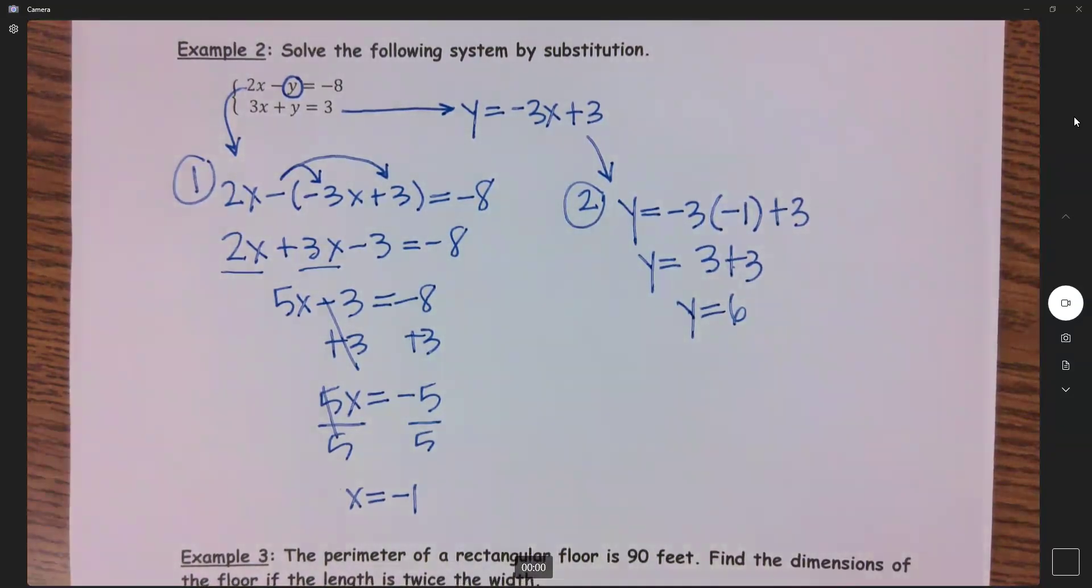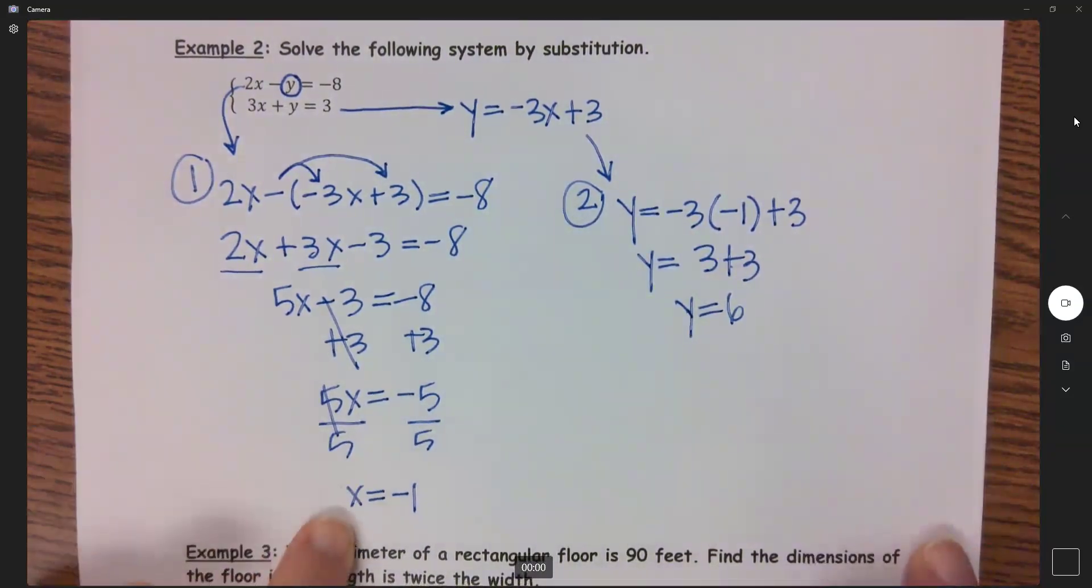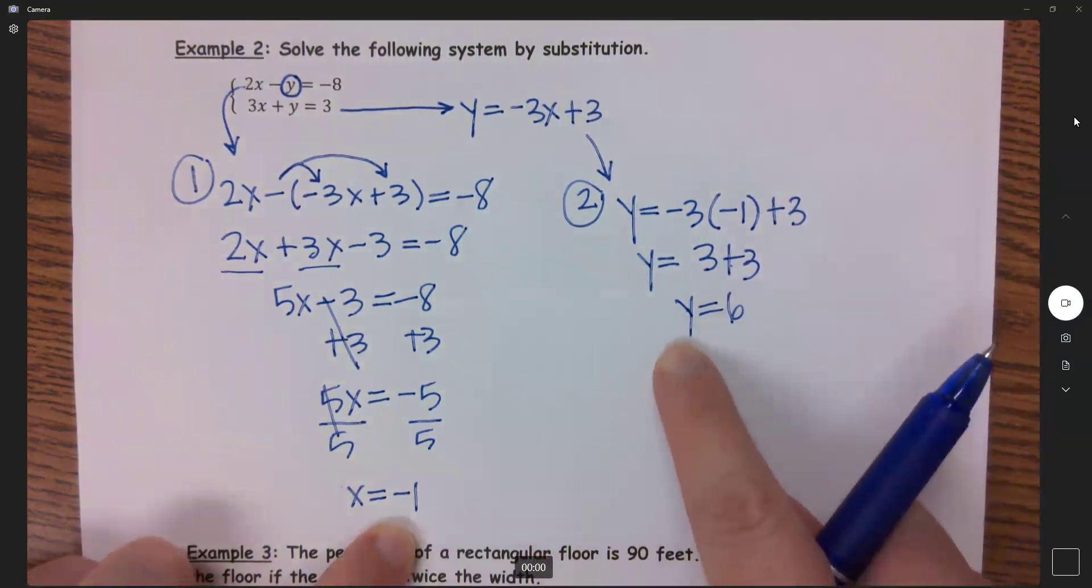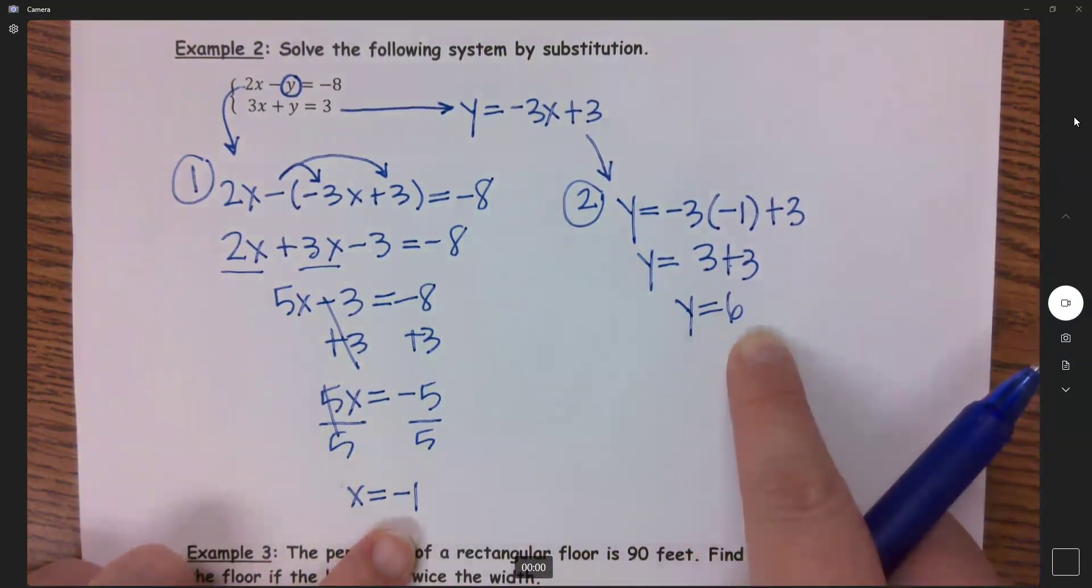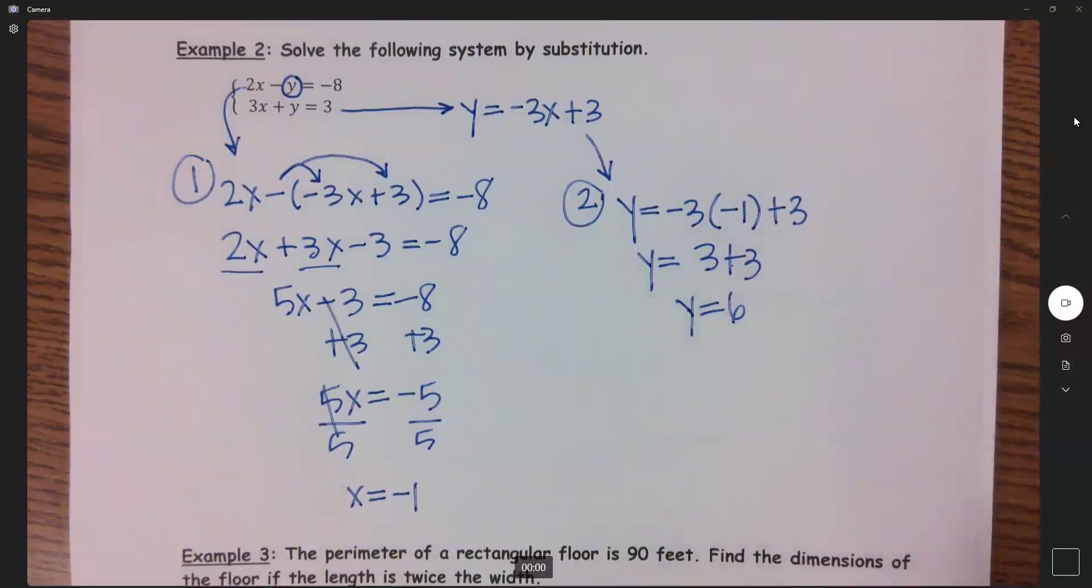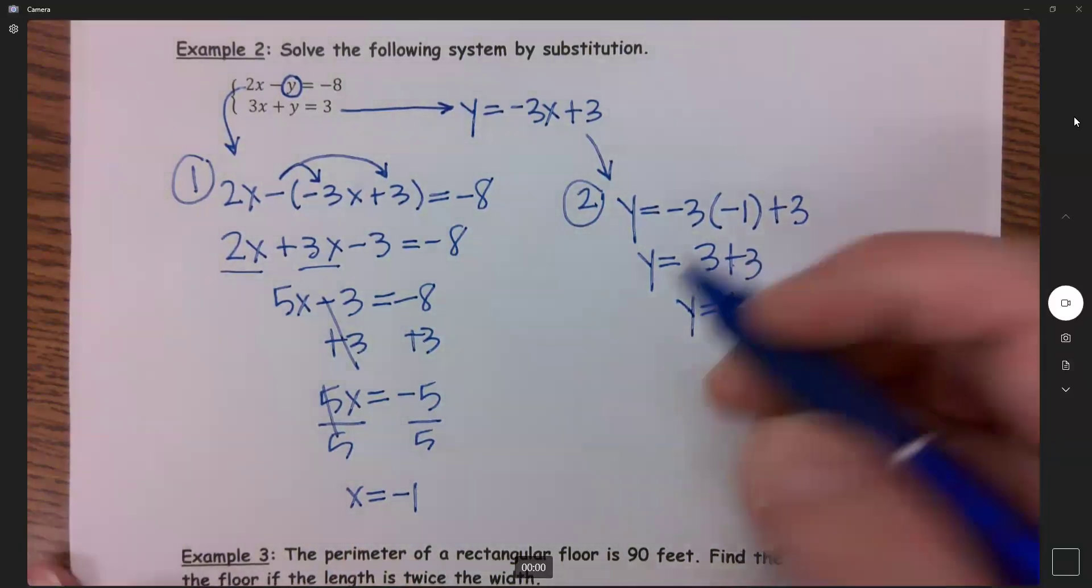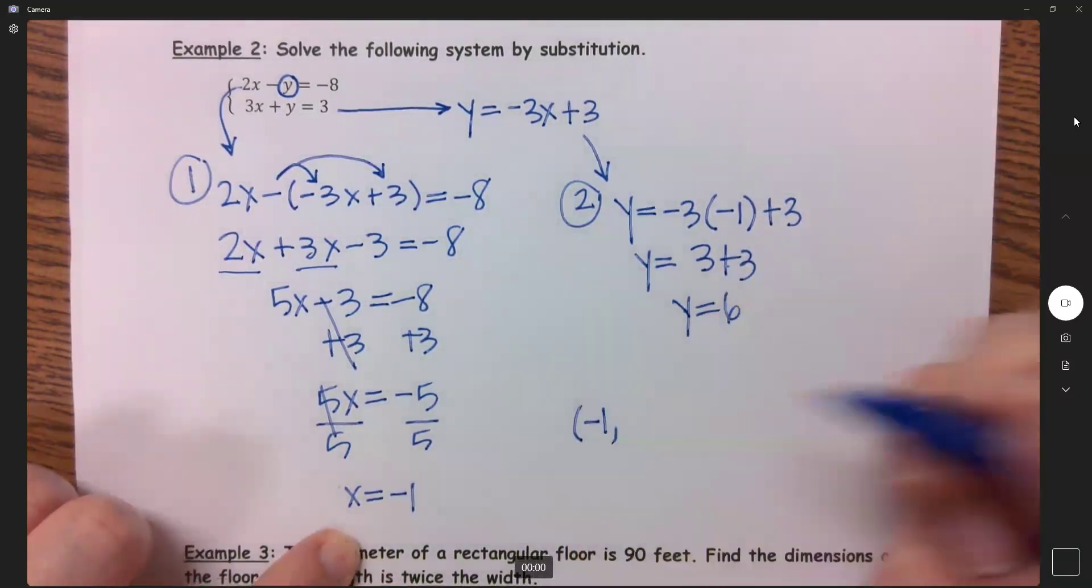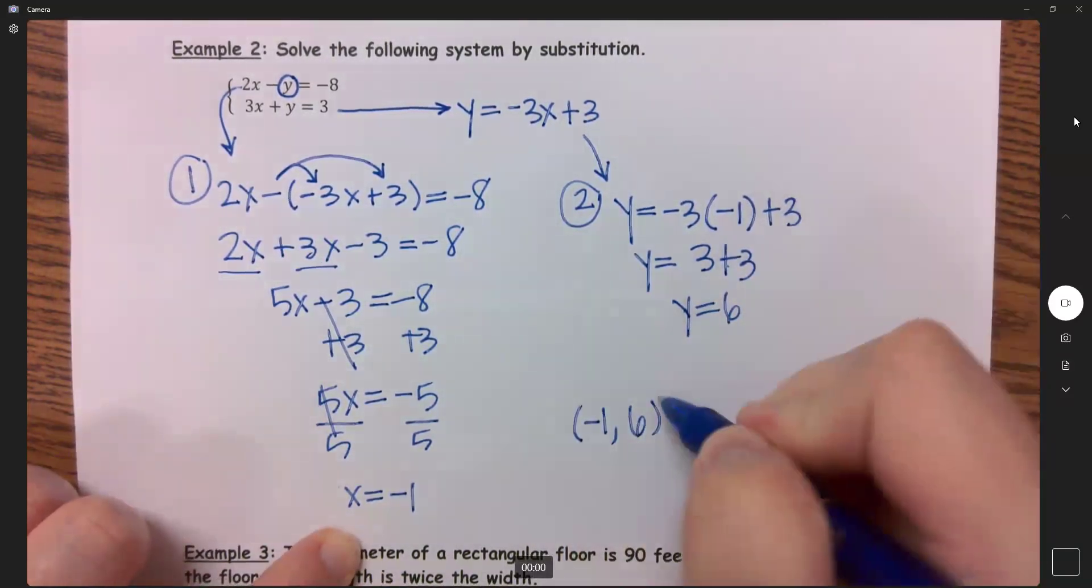Now for the record I am pretty sure your homework just wants to know x equals blank, you'll type in the negative 1, and then we'll have y equals a blank and you'll type in the 6. But for me I need these as ordered pairs. So my solution is the ordered pair negative 1 comma 6.